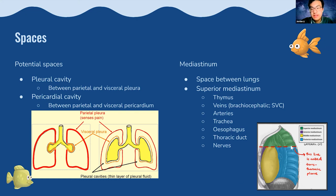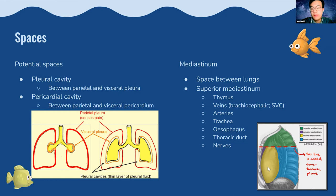The mediastinum is the natural space between the two lungs, divided into four major regions. The superior mediastinum contains the thymus, brachiocephalic veins, superior vena cava, arteries to the arms and head, the trachea, esophagus, thoracic duct, and passing nerves. The inferior mediastinum is divided into three parts: anterior mediastinum, middle mediastinum, and posterior mediastinum.